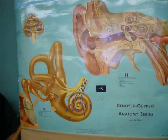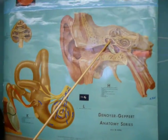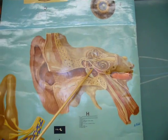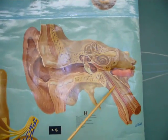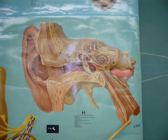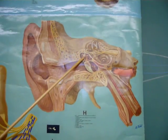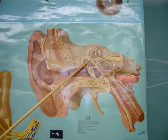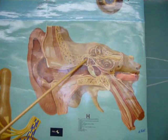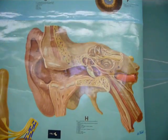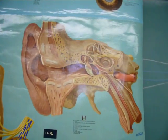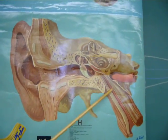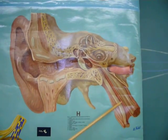The middle ear — this space starting here and descending all the way down. Here in the middle ear is where we have the ossicles, the group of three bones. And descending down, this is the auditory tube.